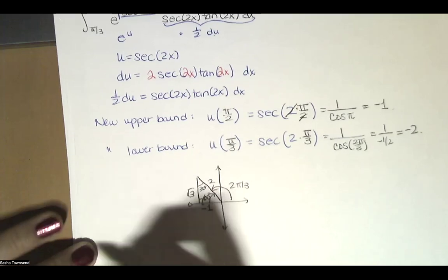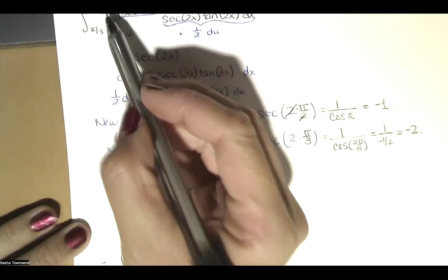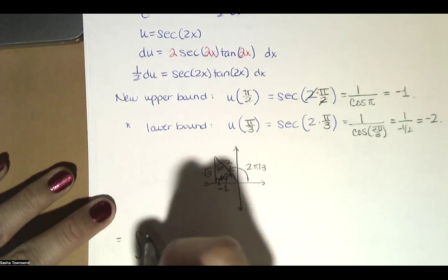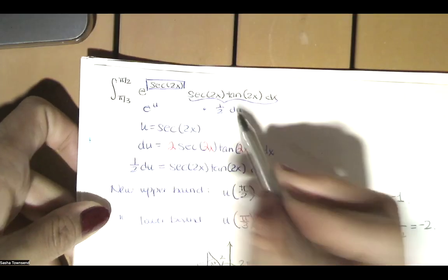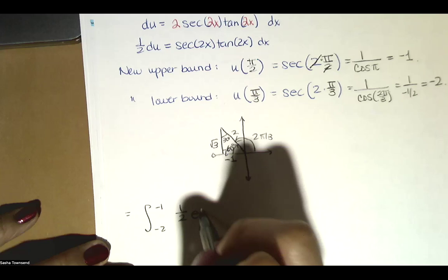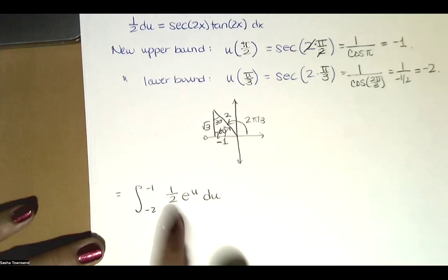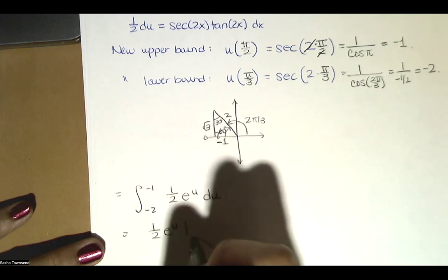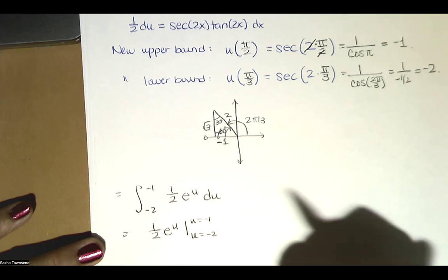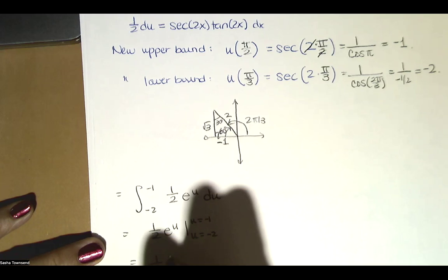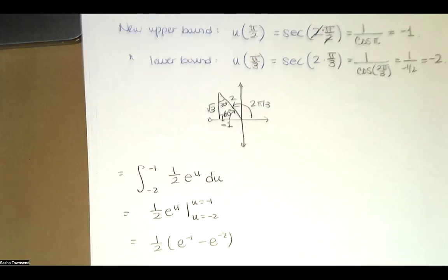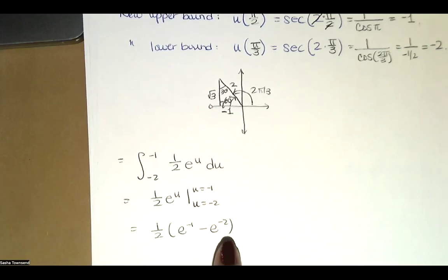Our integral becomes the integral from −2 to −1 of e to the u times 1/2 du. Factoring out the 1/2, and since we do have a rule for that, we compute the antiderivative: 1/2 e to the u. We evaluate at u = −1 and u = −2 and subtract, giving 1/2 times (e to the negative 1 minus e to the negative 2). That's our final answer. You can write that as 1/e minus 1/e squared if you prefer.